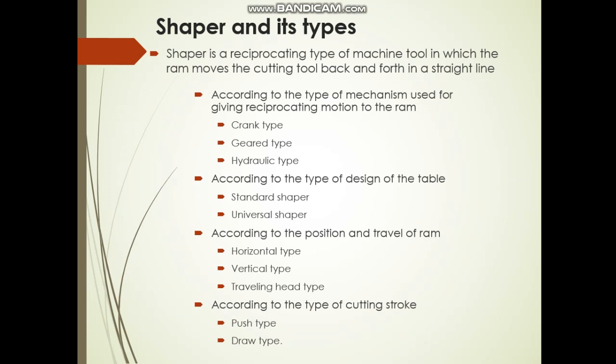The types are important and will be covered in detail. According to the type of mechanism used for giving reciprocating motion, the ram is an important part. We can see the types on the next slide. The ram performs the back-and-forth motion, driven by the motor.